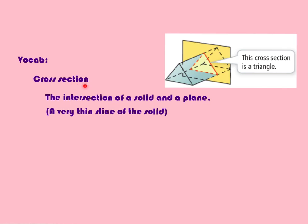Now here's the cross-section we were talking about at the beginning. A cross-section is the intersection of a solid and a plane — you can think of it as a very thin slice of the solid. Here's our solid shape, and the cross-section is a plane cutting through it, creating this thin little slice.